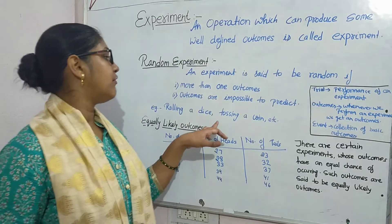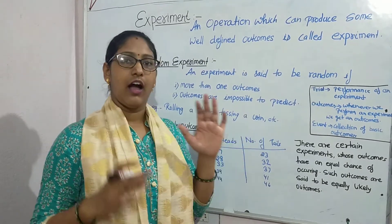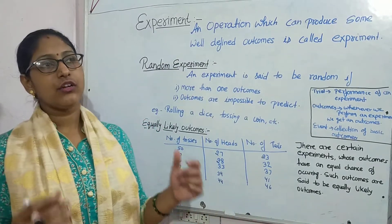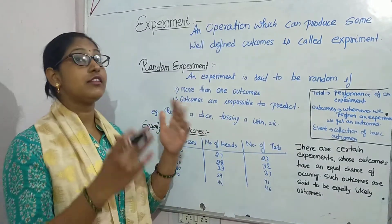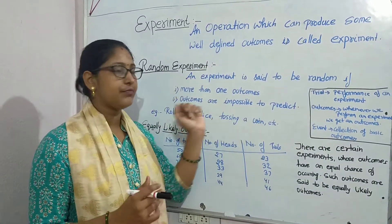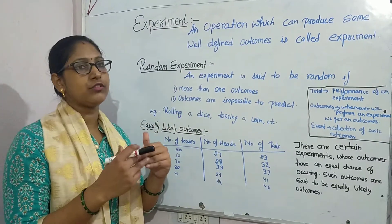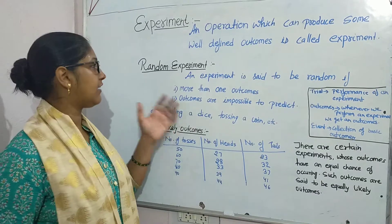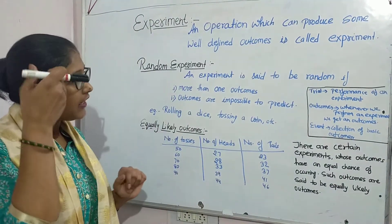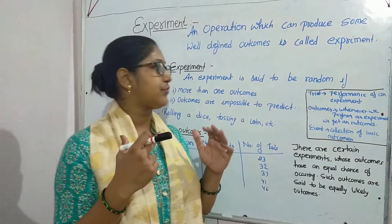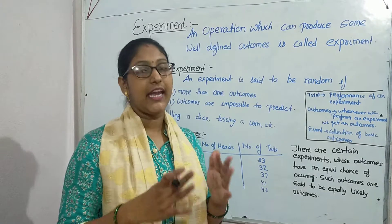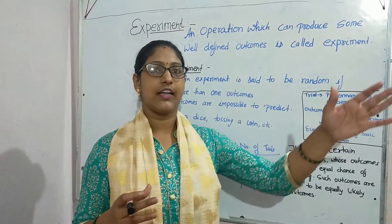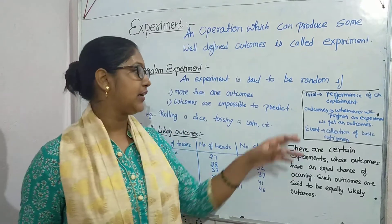Same way, when tossing a coin, our result is either head or tail. Here outcomes are more than one and it is impossible to say whether head is coming or tail is coming, so it is said to be a random experiment. When we perform any experiment, it is said to be a trial. For example, rolling a dice is said to be a trial.